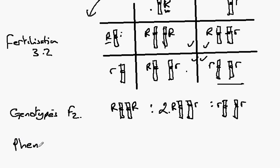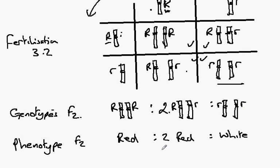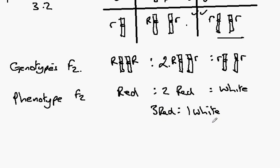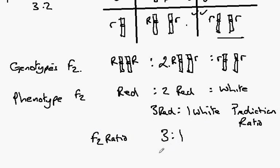We now write down the phenotype of the F2. The big R big R and both big R little r individuals would be red, while the little r little r individuals would be white. This gives us a ratio of three red to one white. It should be noted that this is not the actual number of offspring obtained, but a prediction stated as a ratio — the F2 ratio of three to one, three red to one white. This is more formally known as the monohybrid ratio.